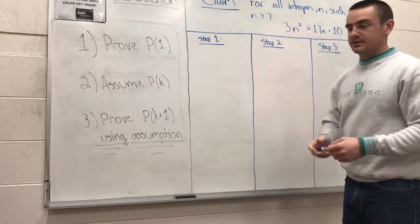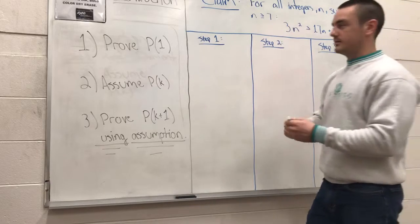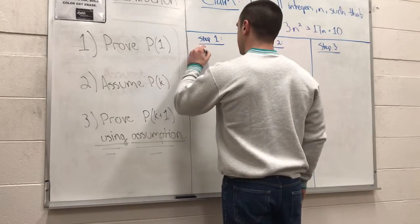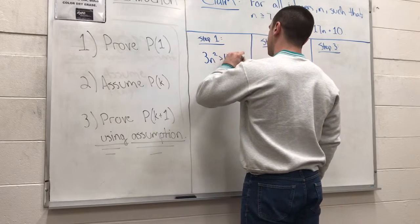Through induction, let's take that first step. Let's prove it true for the smallest given value, which is 7. So we have 3n squared is greater than 17n plus 10.